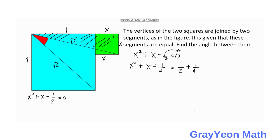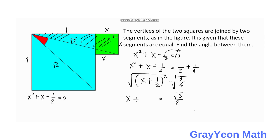So we have x squared plus x plus one-fourth, which we write as x plus one-half, squared. The right-hand side becomes one-half plus one-fourth, which is three-fourths. Therefore, taking the square root of the left-hand side, x plus one-half equals the square root of three-fourths. Since we are getting a distance and there is no negative distance, we only accept the positive value, so x equals negative one-half plus square root of three-fourths.